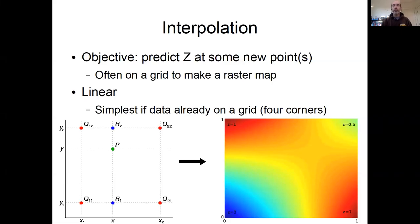In this next section on spatial exploratory data analysis, I'm going to talk about methods for spatial interpolation. The objective of interpolation is you have geospatial data, so X-Y locations with some attribute Z associated with them, and you're often trying to make a grid.